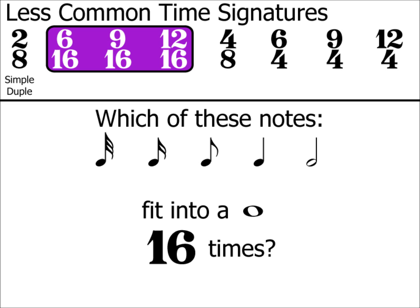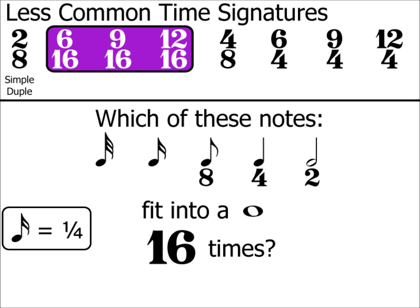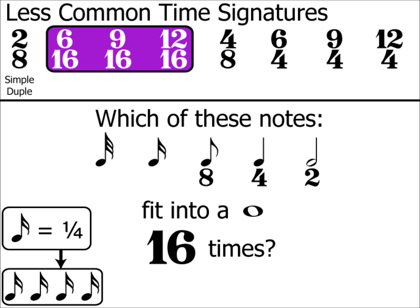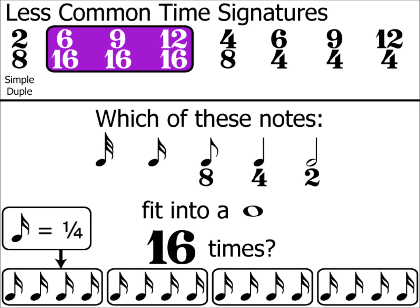All of these are accounted for: the minim fits into a semibreve twice, hence the 2; the crotchet fits 4 times, hence the 4; and the quaver fits 8 times. So let's have a look at a semiquaver. One semiquaver equals a quarter, therefore a group of 4 semiquavers equals 1. Because a quarter plus a quarter plus a quarter plus another quarter equals 1. So 4 groups of 4 semiquavers equals a semibreve. Because 16 semiquavers fit into a semibreve, we now know that the 16 at the bottom of the time signature represents semiquaver beats.